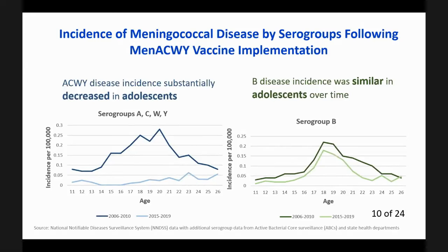This slide shows the incidence of disease following MenACWY vaccine implementation. For serogroups A, C, W, and Y, in the pre-vaccine era noted by the dark blue line, MenACWY disease increased around 15 to 16 years of age, and following MenACWY vaccine implementation noted by the light blue line, disease decreased dramatically, although there is still a peak at 12 years of age, which could increase if the 11 through 12-year-old dose were eliminated. Serogroup B disease became the dominant cause of meningococcal disease in adolescents, although incidence has decreased slightly since the pre-vaccine era.